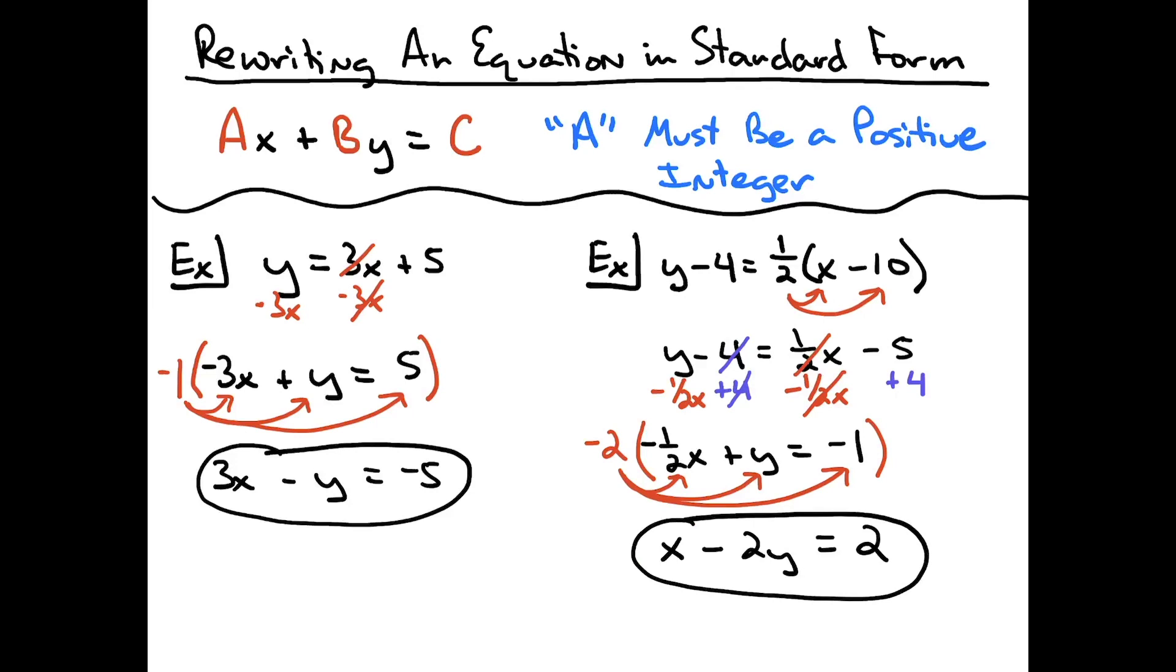So the main point here is making sure that that a coefficient is a positive integer. And when you choose to write your terms on the left hand side, you always want that x term first and then that y term second.